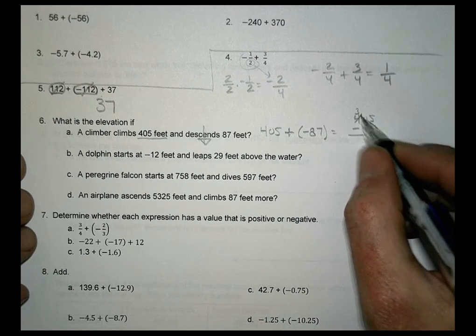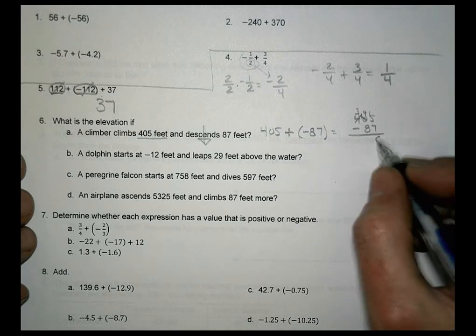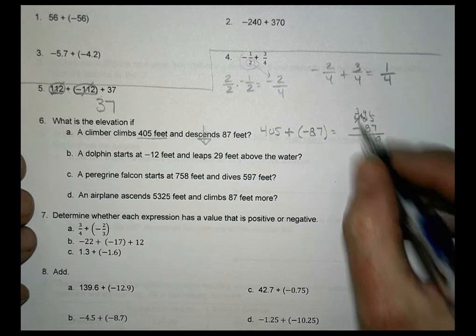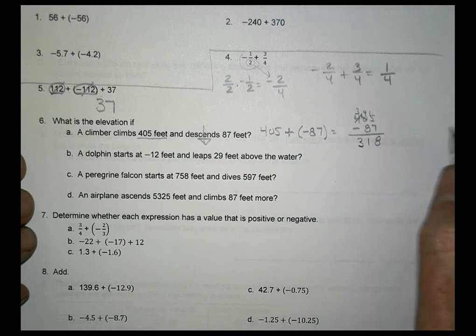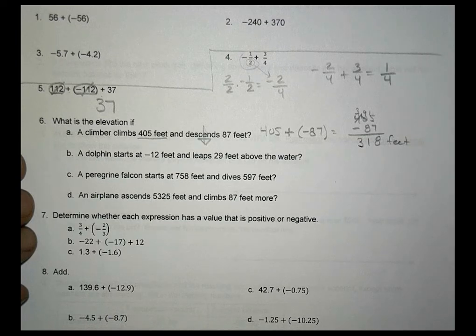I have to borrow from that one, borrow from that one. So 15 minus 7 is 8, 9 minus 8 is 1, and 3 minus 0 is 3. So the elevation is going to be 318 feet.